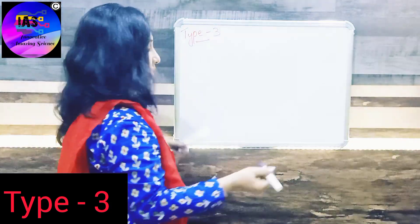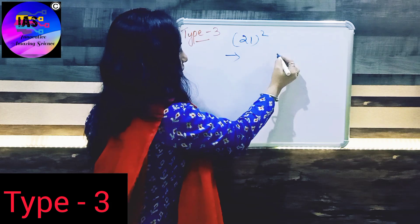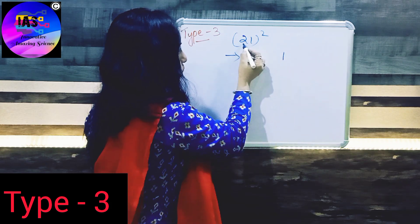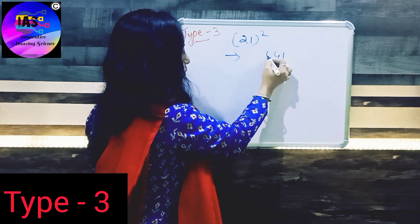So let's see a few other examples. 21 square becomes 1 square is 1. Then 2 into 1 is 2, 2 into 2 is 4. Then 2 square is 4.